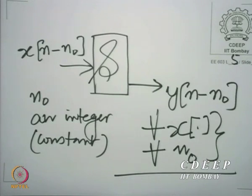This is the formal statement. The key idea is that when I shift the input by an integer number of samples — note, we only require n0 to be an integer — the only consequence on the output is that the output is also shifted by the same number of samples. Not only that, this holds for every possible input and every such shift.